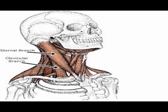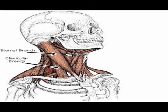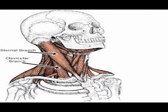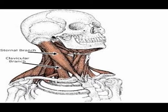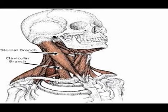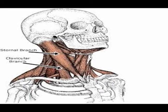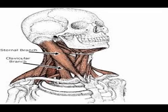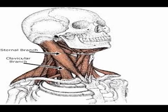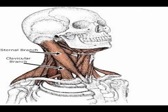Sternocleidomastoids are often abbreviated to the SCMs. They are one of the largest and one of the most superficial of the cervical spine muscles. The SCM has two branches: the sternal branch and the clavicular branch.